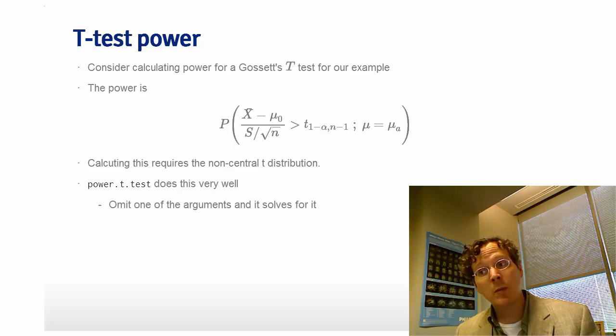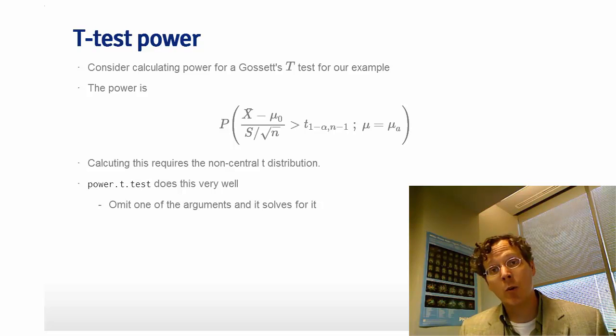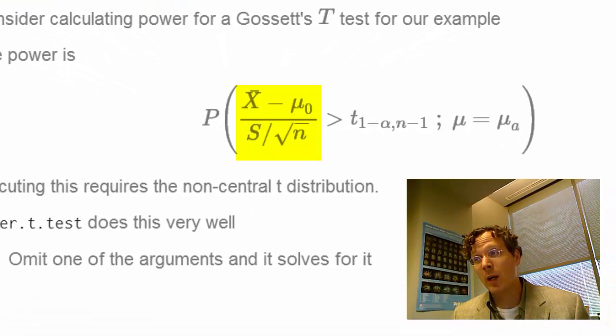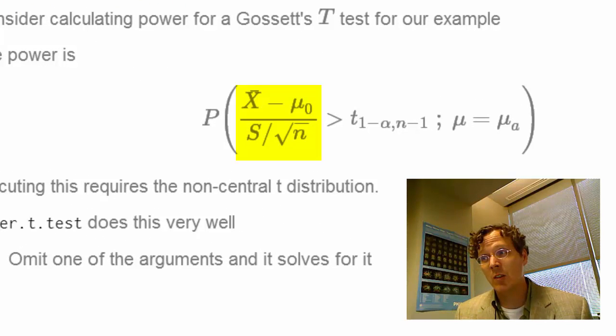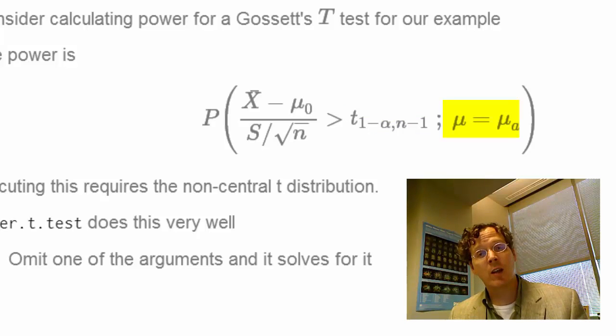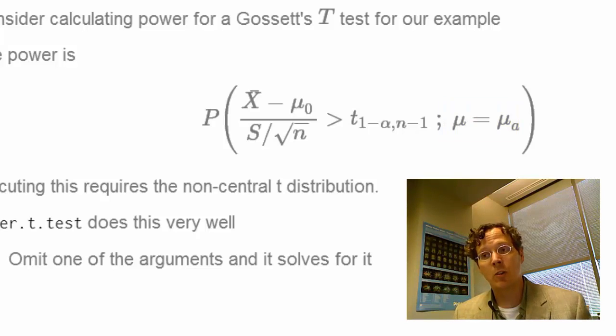The argument is very similar to what we did in our normal distribution case. We're going to reject if our test statistic, in this case x-bar minus mu-naught over the estimated standard error, is now bigger than a t quantile rather than a z quantile because we're talking about a t-test. Only because we're talking about power, this is going to be calculated not under the hypothesis that mu equals mu-naught, but under the hypothesis that mu equals mu-a, the value under the alternative.